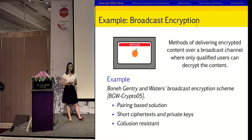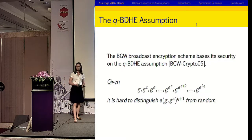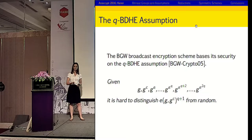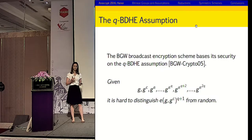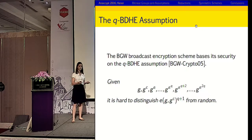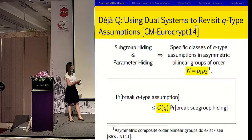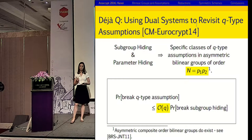One motivational example I'm going to use is broadcast encryption. The BGW broadcast encryption scheme is based on an assumption called the QBDHE assumption, which is something our framework can cover. This assumption is essentially a fill-in-the-gap assumption. It says: given G, G to the alpha, G to the alpha squared, and all of these other powers of alpha, find G to the alpha to the Q plus 1 in the target group.